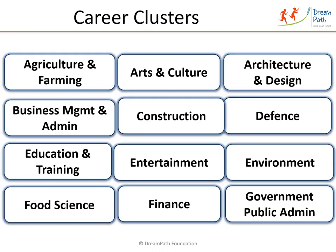Here is a list of career clusters, organized in alphabetical order. Agriculture and farming includes careers like farmer, agricultural scientist, and careers in horticulture, poultry farming, etc. Arts and culture includes careers in visual and performing arts like dance, music, painting, pottery, and sculpting.